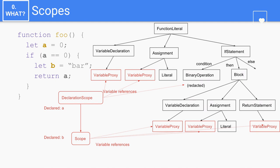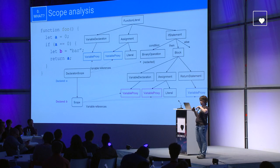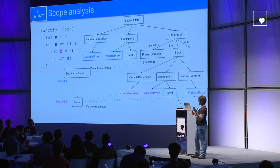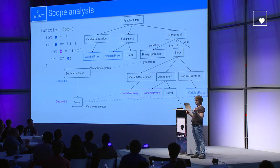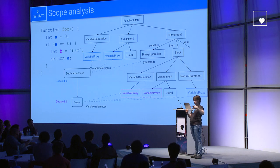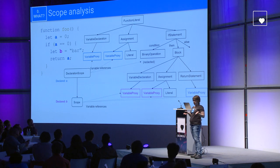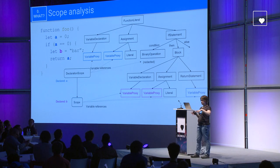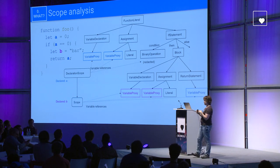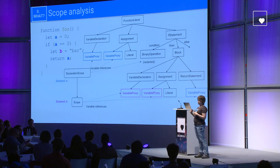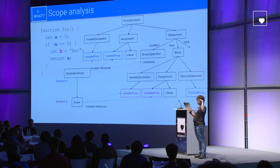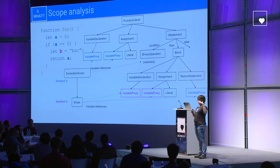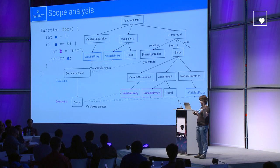Then we do scope analysis, which means we connect the variable proxies to the declared variables. In this phase, we figure out that all references to A actually mean the variable declared in the function, and all references to B mean a different variable. To do this, it's not enough to just look at the current scope. With the return statement, A is not declared in that scope, so we walk up the scope chain to find where the variable is declared, finding it in the parent declaration scope.